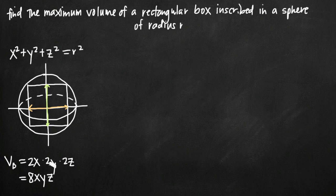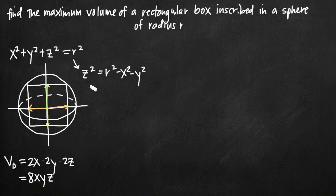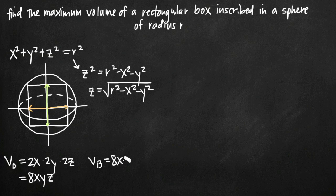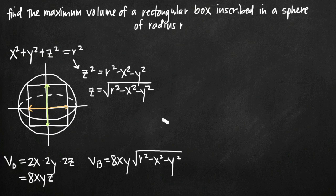Since we want to optimize the volume equation, we need to reduce it to two variables. We eliminate z by solving the sphere equation for z: z² = r² − x² − y², so z = √(r² − x² − y²). Substituting into the volume equation gives V = 8xy√(r² − x² − y²), with only x and y as variables since r is a constant.